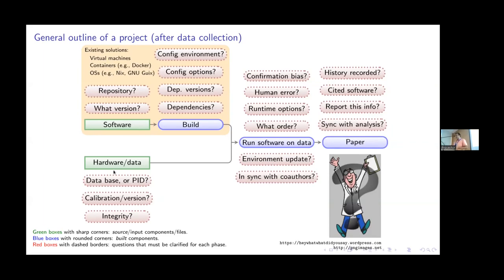For the data: does the database have a persistent identifier? What calibration or version was used? Was there a problem with data integrity during download? And when you run the software, how do you deal with confirmation bias? When you get a good result that fits your hypothesis, we usually jump to the next step. When we've gone five steps ahead, it's almost impossible to come back because we can't really change the decision we made when we were happy, but later discover it was a mistake.